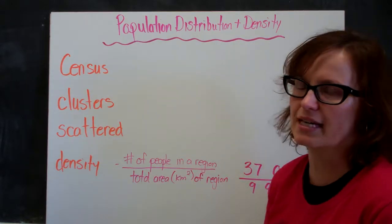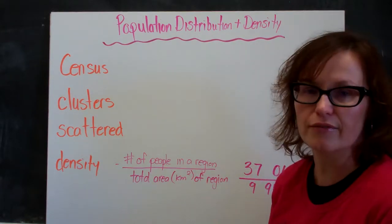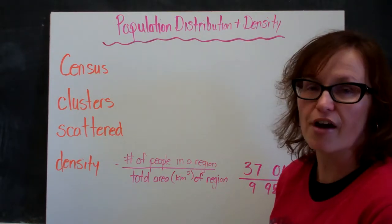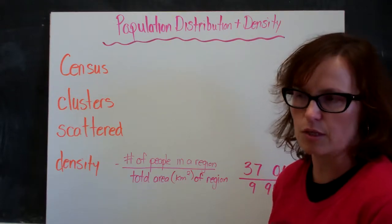One of the ways that governments gather information about who lives within their borders is through a census. In Canada we do a census every five years, and every ten years there's a more detailed census where people actually travel door-to-door asking families questions.